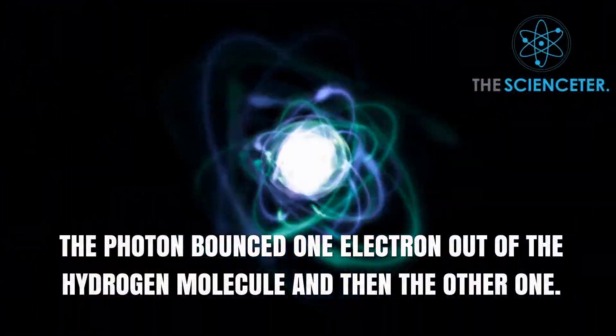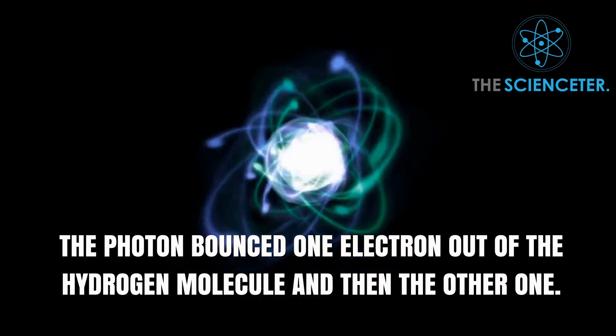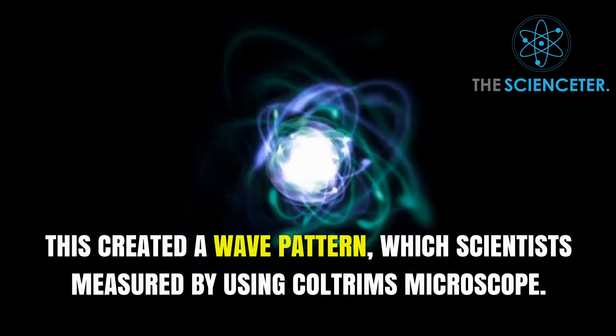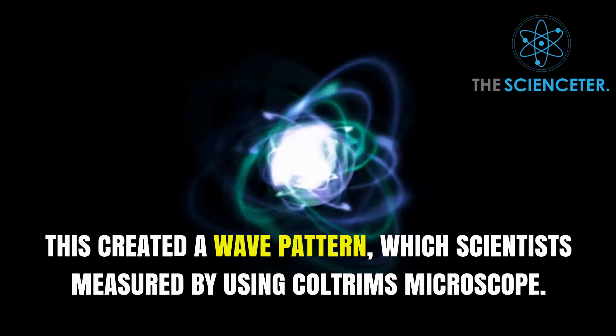The photon bounced one electron out of the hydrogen molecule and then the other one. This created a wave pattern which scientists measured by using Coltram's microscope.